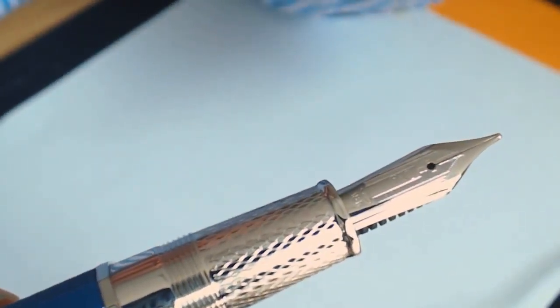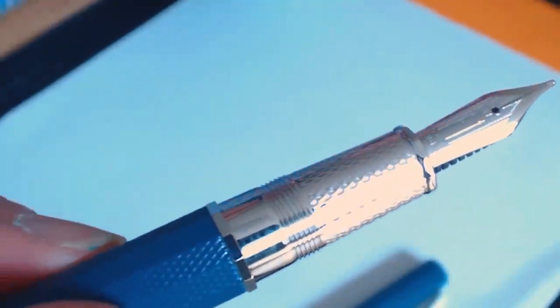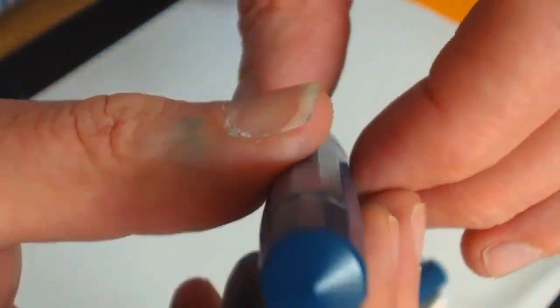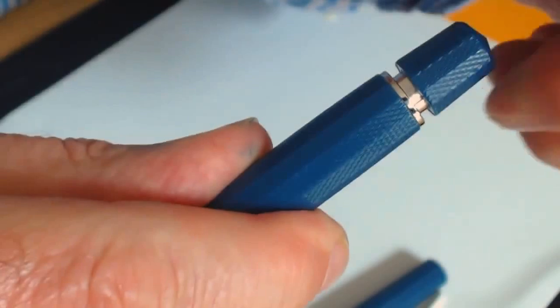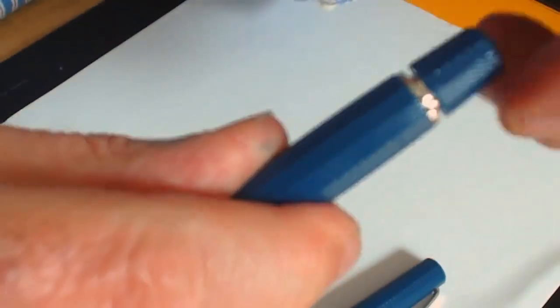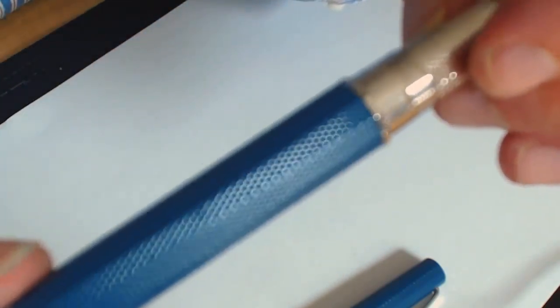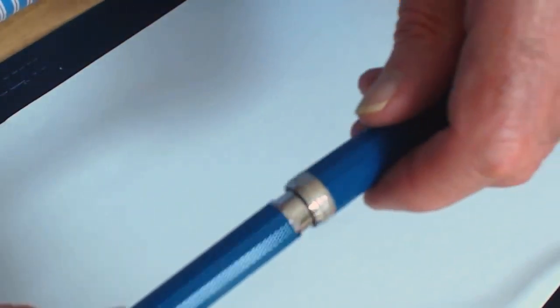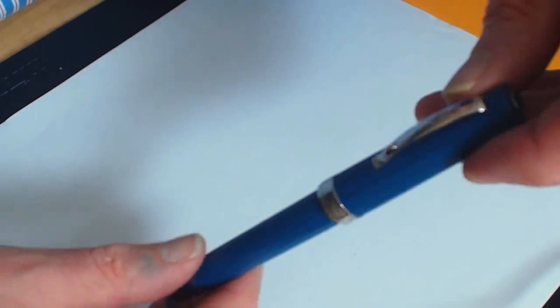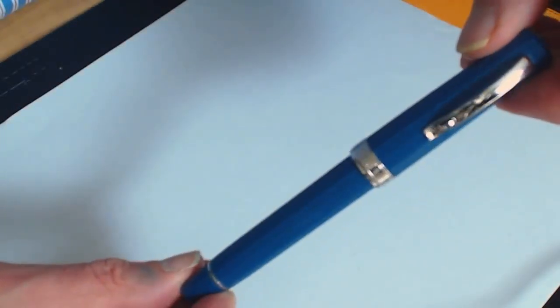The other thing that distinguishes this from virtually all other Milords, apart of course from the celluloid one, is that it is a piston filler—the system we all like best, I suspect. This one will take significantly more ink than a standard cartridge, so well worth going for. There are many of us who think that a fountain pen ideally should be a piston filler if you can afford that.